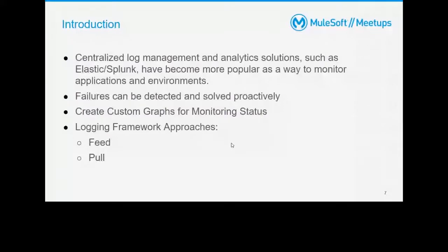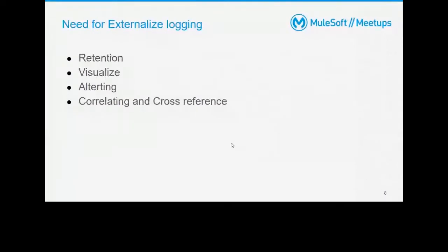There are two logging framework approaches: feed and pull. Feed is when you send your logs to an external system; pull is when you pull from Anypoint APIs such as CloudHub. For today's demo, AWS CloudWatch will use the feed approach — we are sending log events to AWS CloudWatch logs. The need to externalize logs includes retention: CloudHub gives 30 days or up to 100 MB on the free tier, up to 1 GB on subscription, but sometimes you need logs for a year or more — such as for financial transactions.